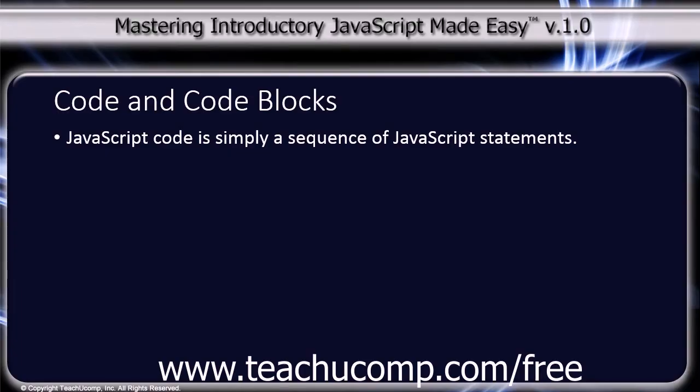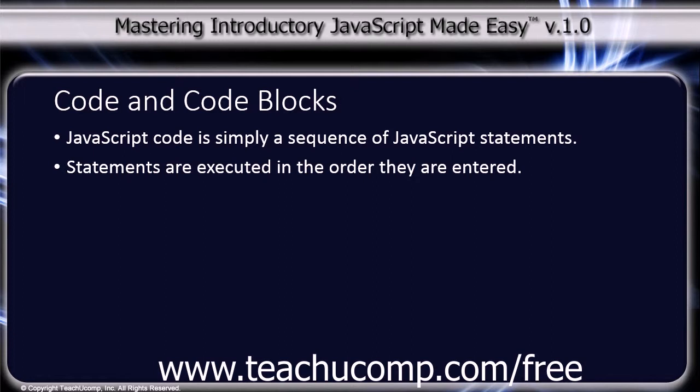JavaScript code is simply a sequence of JavaScript statements. Each statement is executed by the browser in the order that they are entered into your HTML document or external JavaScript file.